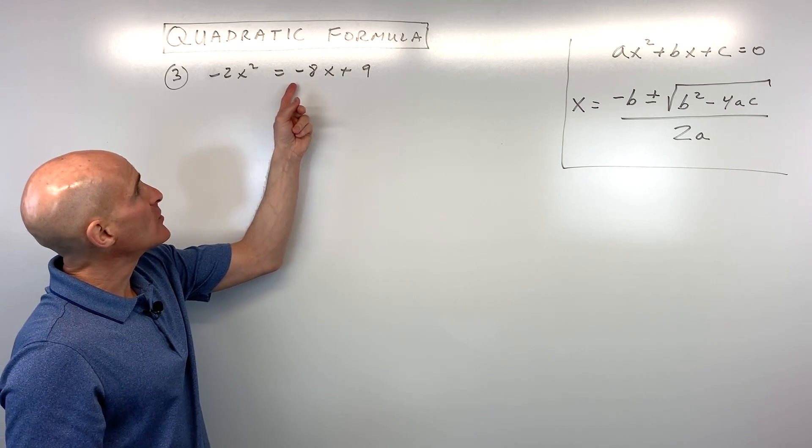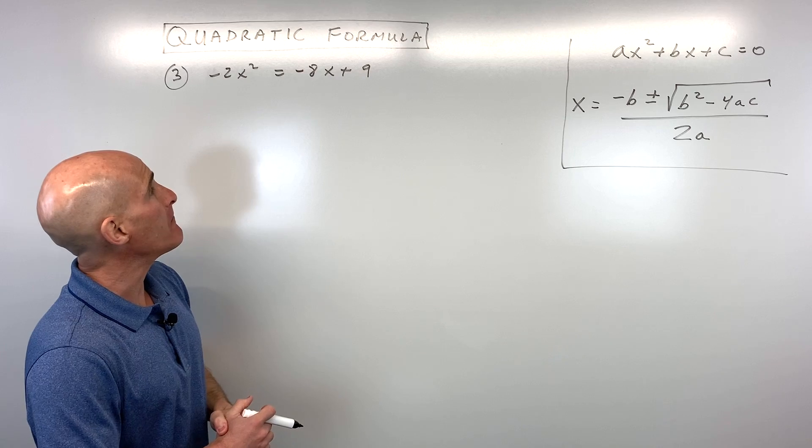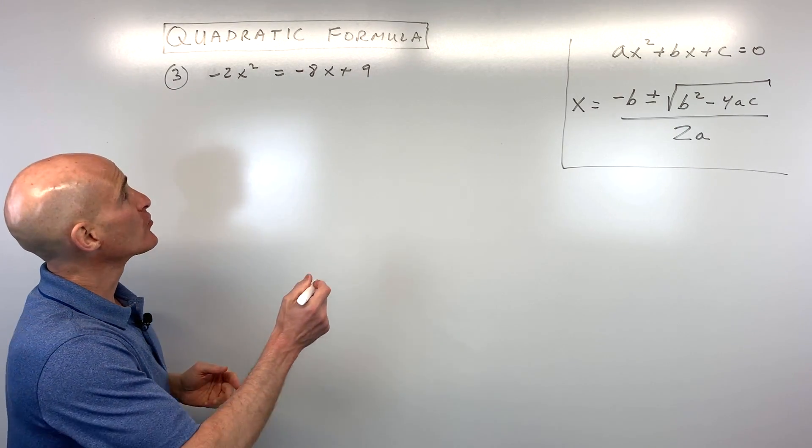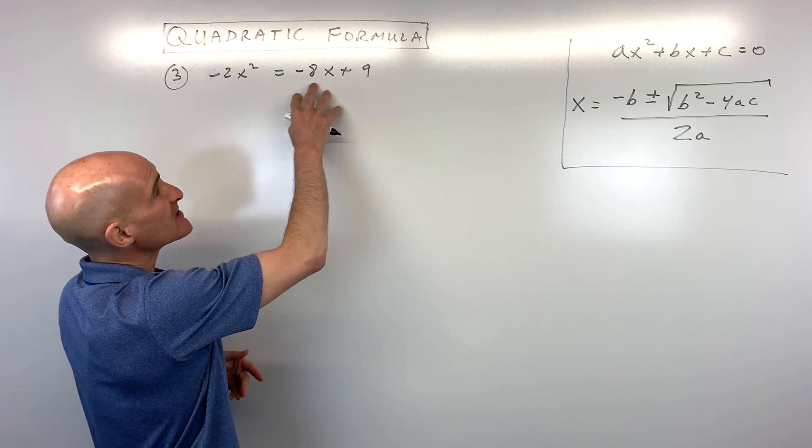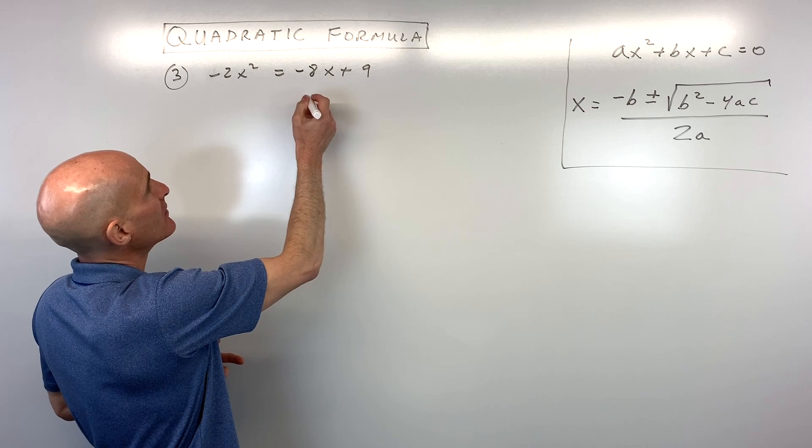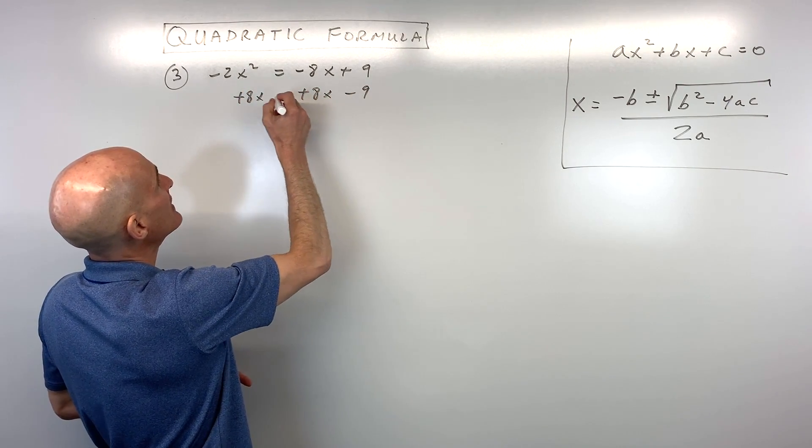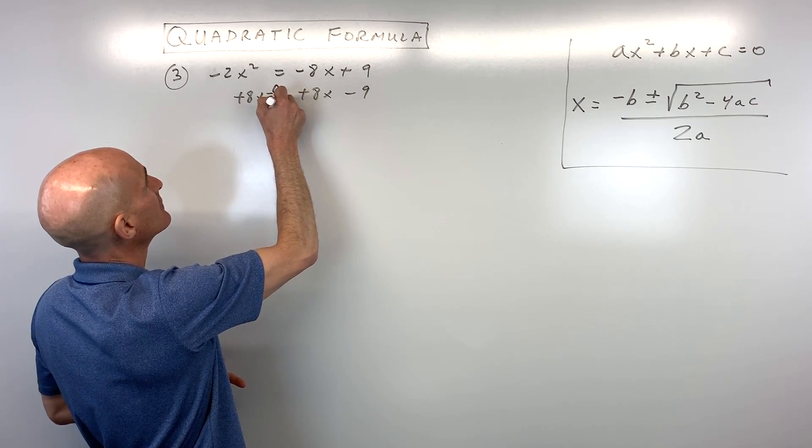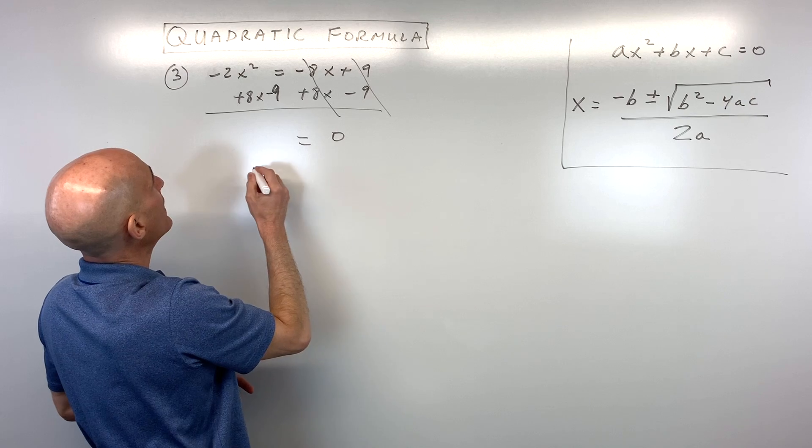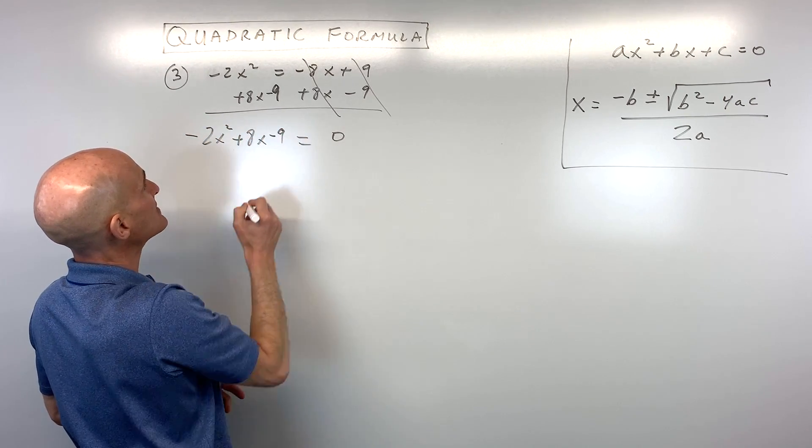We've got negative 2x squared equals negative 8x plus 9. So what do you think the first thing we should do is on this problem? Well, if you said get everything on one side of the equation and set it equal to 0, you're absolutely right. And it doesn't really matter what side you get it on as long as it's all on one side. So in this case, I'm just going to get everything on the left by adding 8x to both sides and subtracting 9 from both sides. So these cancel. That's going to give us 0 on the right. And we have on the left negative 2x squared plus 8x minus 9.